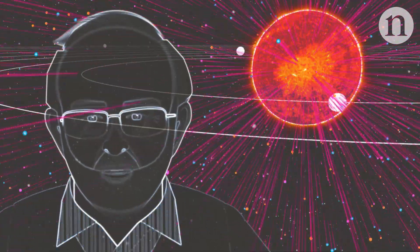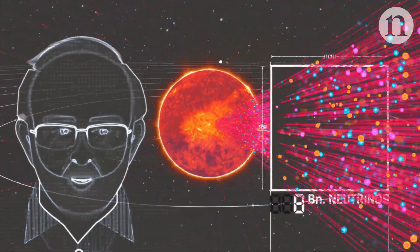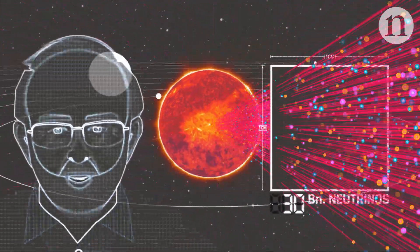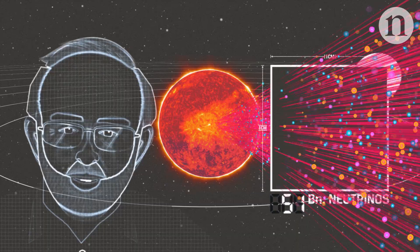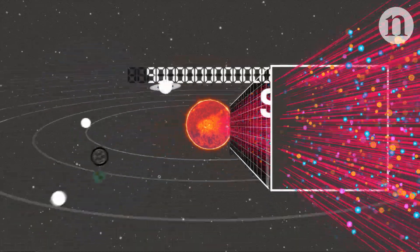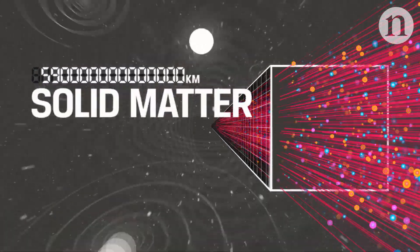Neutrinos are very penetrating objects. For them, matter is open space. Passing through every square centimeter of your body every second there are a few billion neutrinos from the Sun, and so they can travel through a million billion kilometers of matter, lead for example, with only a 50% chance of hitting something.